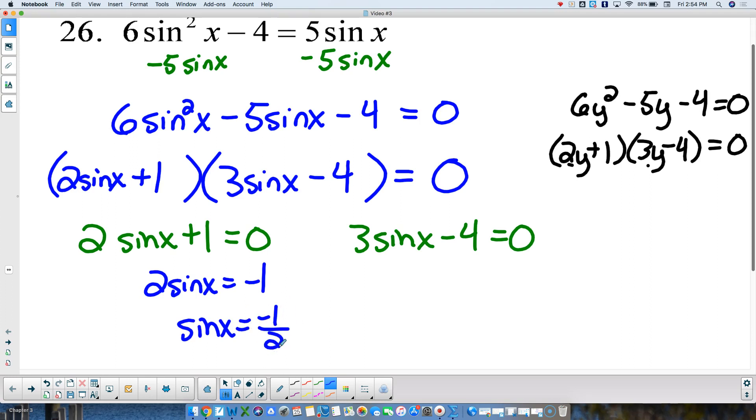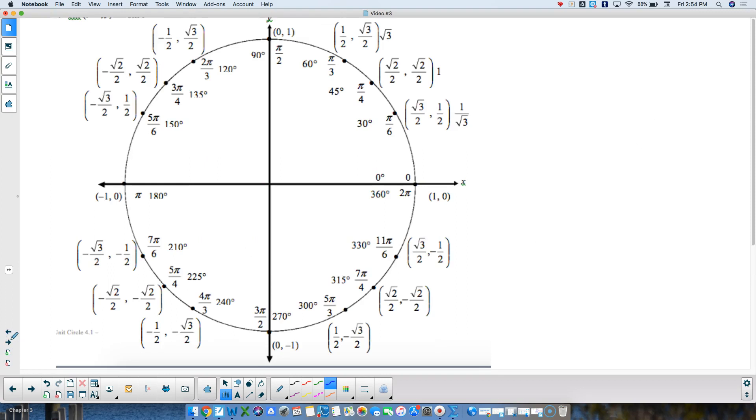Go to my unit circle. Where is the sine equal to negative 1 half? Well, that's right here, so that's 7 pi over 6. And that's right here, so that's 11 pi over 6.